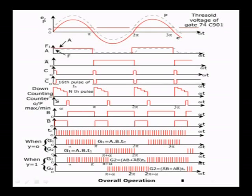In the detailed waveforms, A and A-bar are the ZCD outputs. The ZCD output resets the counter and the down counting starts when the ZCD output is received. When the counter reaches the preset value, its output goes high and sets the flip-flop, with B becoming 1. The train of pulses generated by the oscillator gets modulated with the firing pulse. We get a train of pulses for gate 1 and gate 2 if Y equals 0, or a different train if Y equals 1. This is the overall operation of a digital firing circuit.